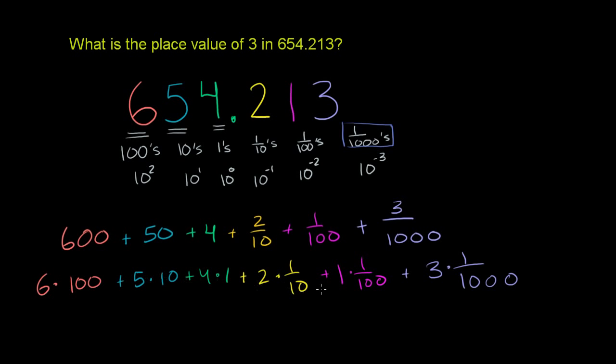So hopefully this, when you write it out like this, gives you a sense of what it means when we say place value. The 6, 2, 3 digits to the left of the decimal is in the hundreds place, so it represents 6 hundreds. This represents 5 tens because it's in the tens place. This represents 4 ones. You go to the thousandths place, this 3 literally represents 3 one thousandths.